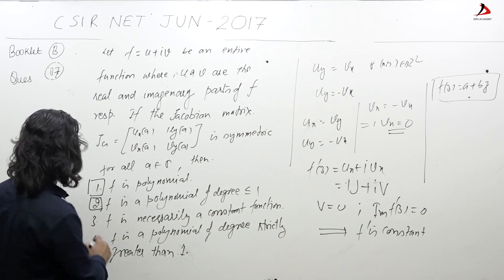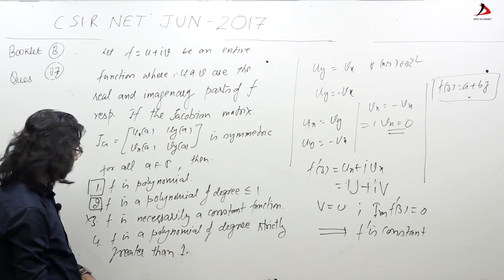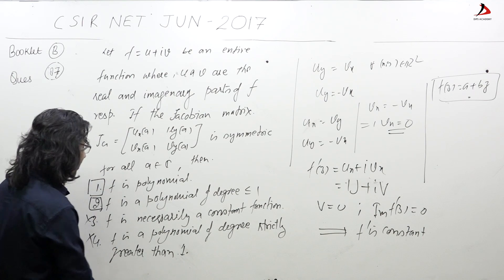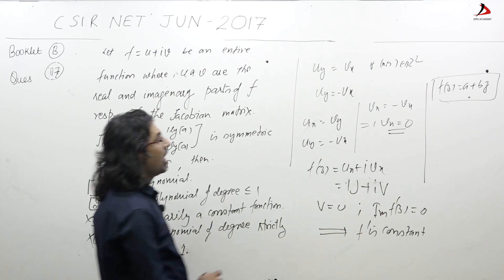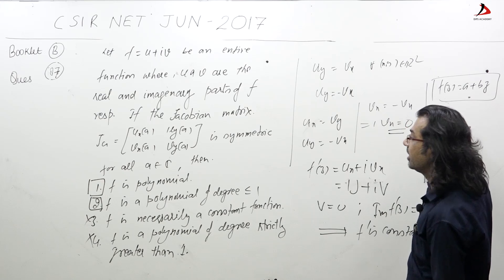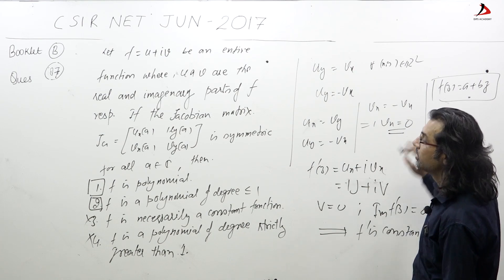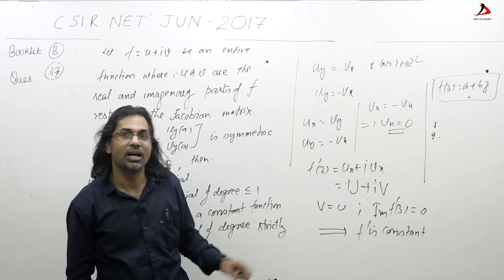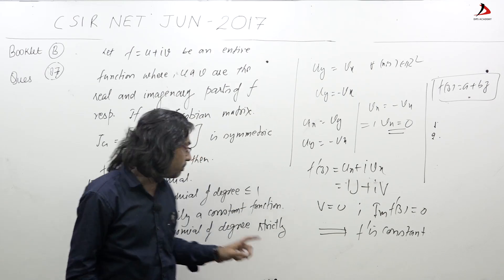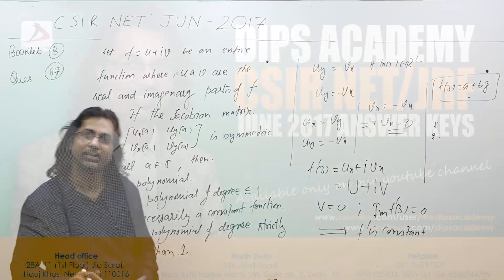F is necessarily a constant function - no, of course not. We have this, it cannot be so. And it is polynomial of degree strictly greater than 1... So answers are 1 and 2. So for question 87, answers are 1 and 2. It is a polynomial of degree 1 at most. Thank you.